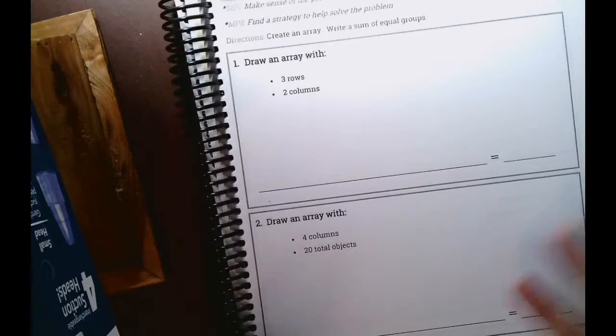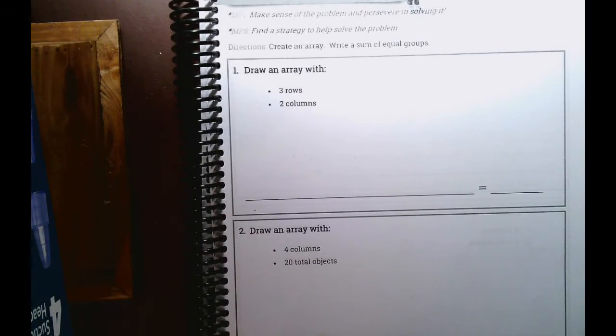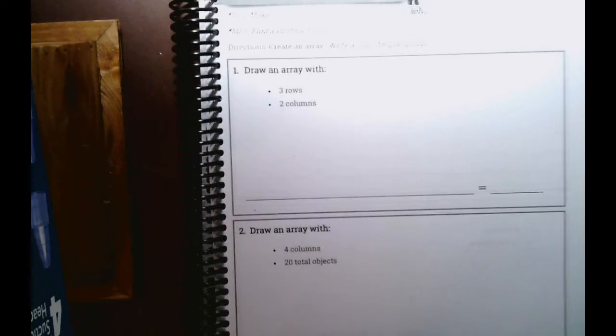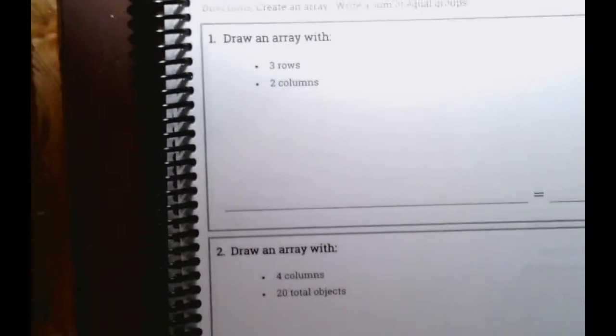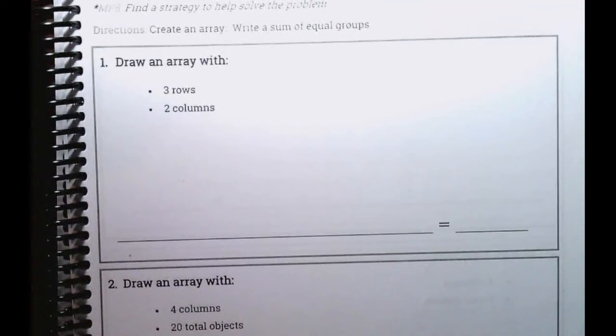Okay, number one says... Let's move the camera up a little bit. A little crooked. There we go. Sorry, trying to get it as clear as possible for you guys so you're not struggling. All right, number one says, draw an array, an arrangement with three rows and two columns.